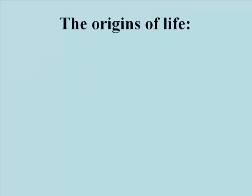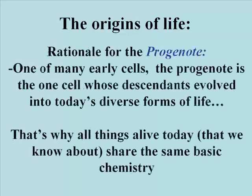Let's talk about the origins of life. All life in existence today can be traced back to a single cell, which is called the progenote. Of course, we can only imagine who and what this cell was. But we can be certain of two things: that the progenote was one of many cells and cell types that co-existed at some point billions of years ago on Earth.